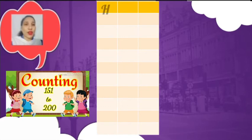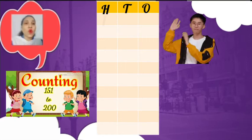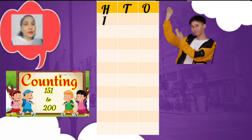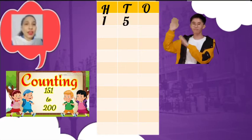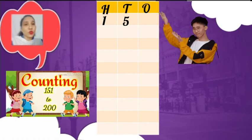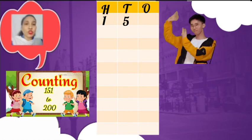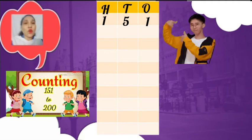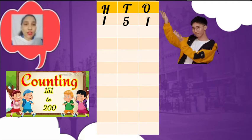Firstly, you have to write down hundreds, tens, and ones. On the hundreds place you will write one, and on the tens place you will write five, and on the ones place you have to write down one. The number becomes 151.